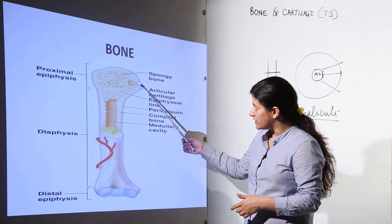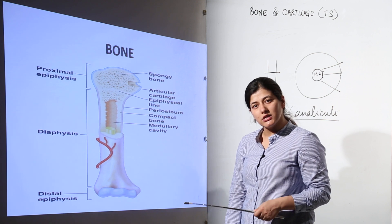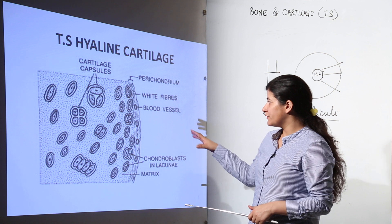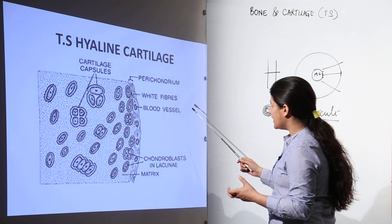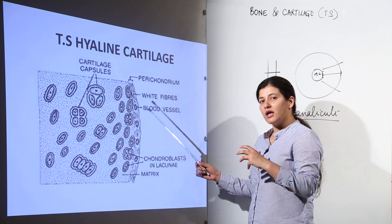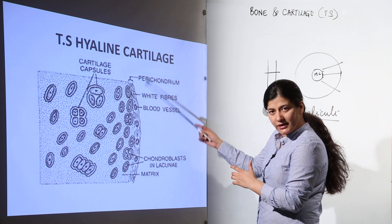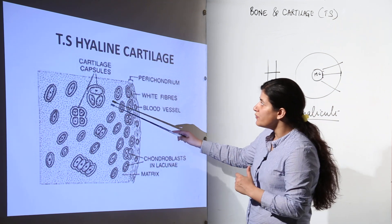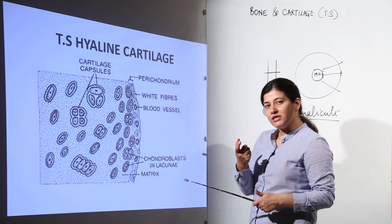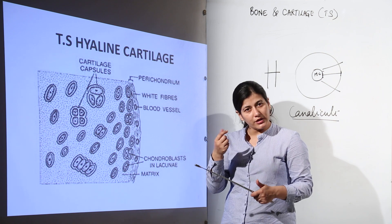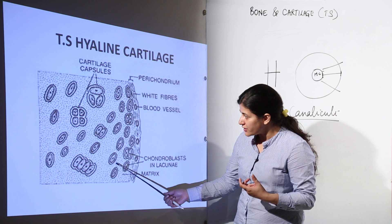Now we move to cartilage. From the previous diagram, the epiphyseal line also has cartilage. The transverse section of cartilage shows perichondrium on the outside — just as bone has periosteum, cartilage has perichondrium, because 'osteo' refers to bone and 'chondro' refers to cartilage. We have white collagen fibers, blood cells scattered in the outer layer, and chondroblasts present in lacunae. Lacunae are small capsule-like spaces inside which cells secrete chondrin, the pliable material that makes cartilage flexible — like your nose or ear.